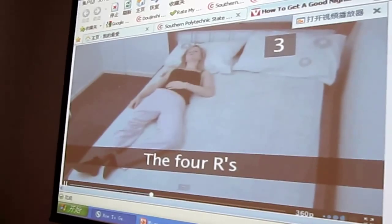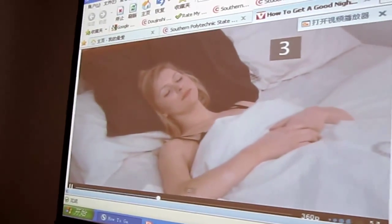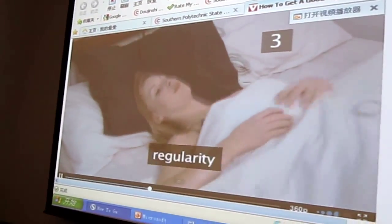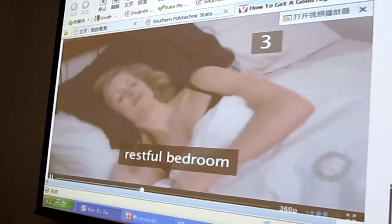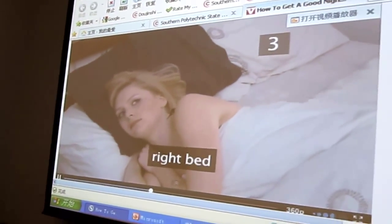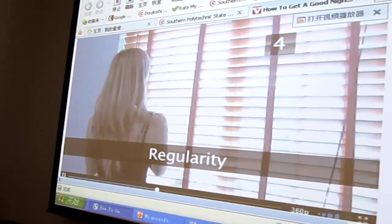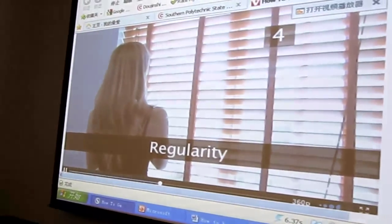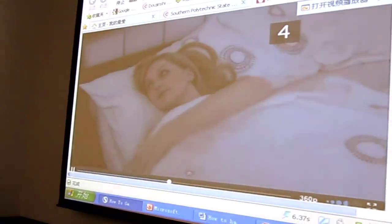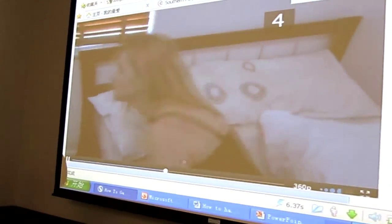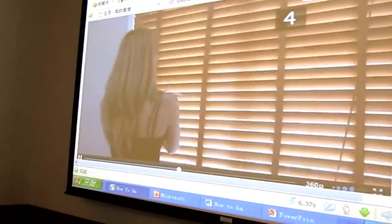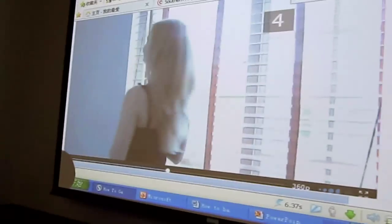Step 3: The 4 R's. Getting to sleep is all about the 4 R's: regularity, routine, a restful bedroom, and the right bed. Step 4: Regularity. Regularity of bedtimes and getting up times helps ensure a good sleep. If possible, try and go to bed and wake up at the same time every day.